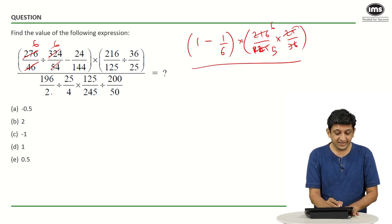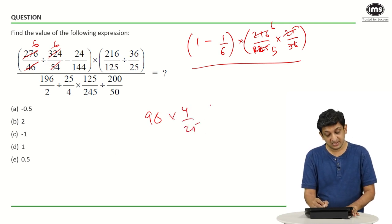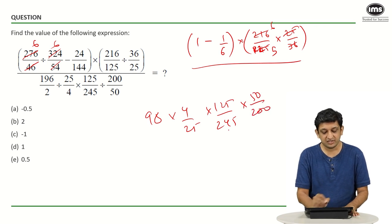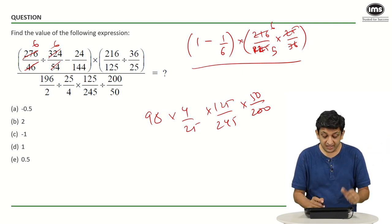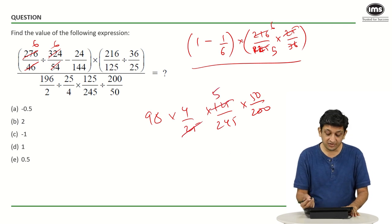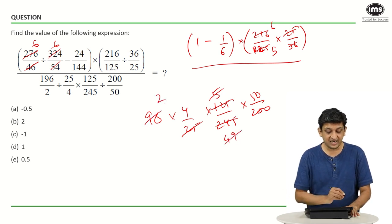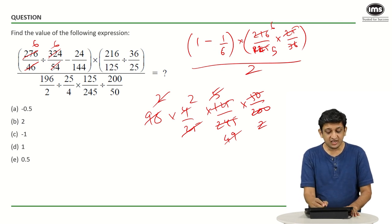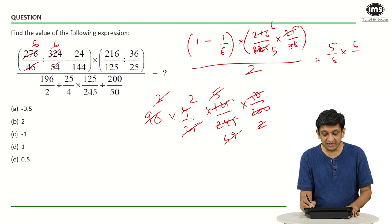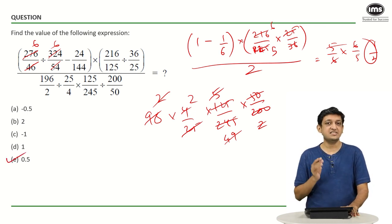Looking at the denominator: 196 by 2 is 98, divided by 25 by 4, meaning multiplied by 4 by 25, multiplied by 125 by 245, divided by 200 by 50 meaning multiplied by 50 by 200. Going left to right and flipping terms as required: cancelling out factors — 25 fives are 125, 5 fours are 20, 5 nines are 45, 49 twos are 98, 50 twos are 100, 2 twos are 4 — the denominator becomes 2. The numerator is 5/6 multiplied by 6/5 which is 1, divided by 2. So the answer is 1/2, which is 0.5. The correct answer is option E, 0.5.